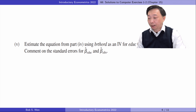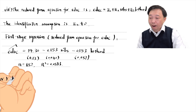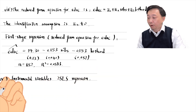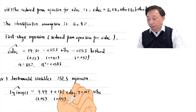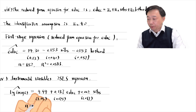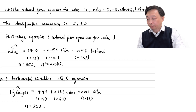In part 5, we estimate the equation from part 4 using birth order as an instrumental variable for education and siblings as its own IV. Comment on the standard errors for the beta education hat and beta siblings hat. The two-stage least squares estimation result is as follows. One more year of education is estimated to increase wages by 13.7%, and it is statistically different from 0 at the 10% level. The standard error for education is 0.075. The estimate for siblings is not statistically significant at any reasonable level. The standard error for siblings is 0.017. The standard errors in the two-stage least squares are quite large.